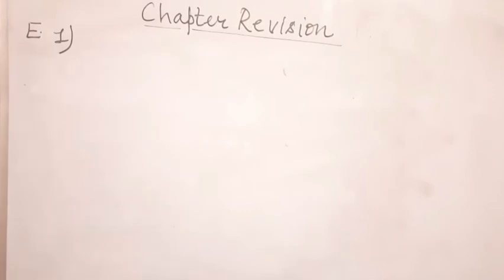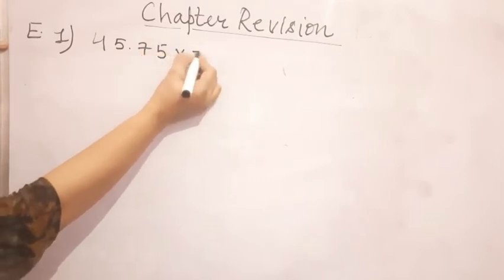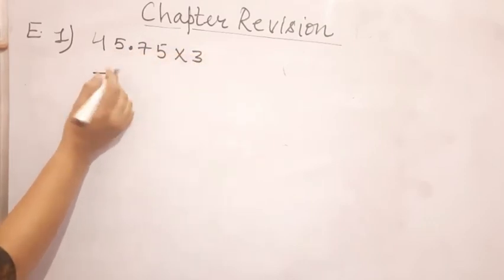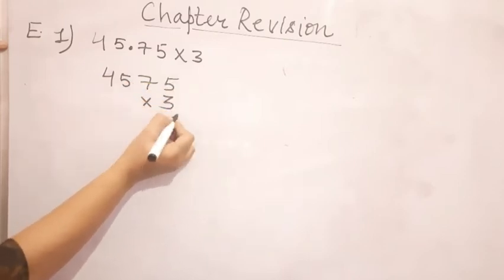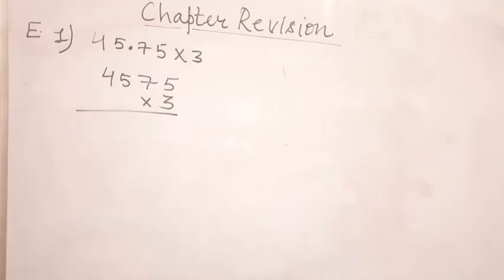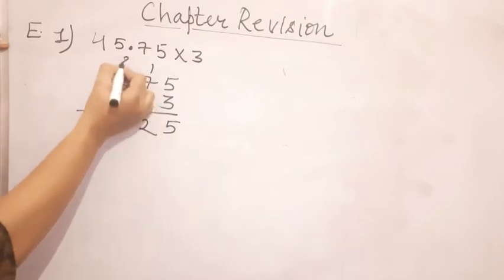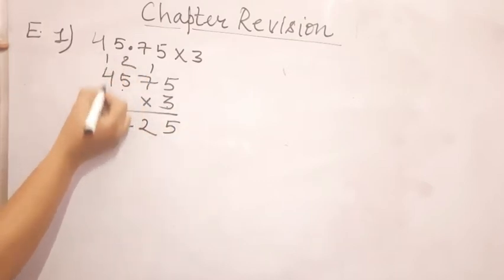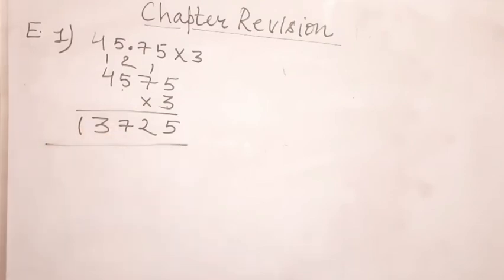The first question in Exercise E is 45.75 multiplied by 3. As I have told you, whenever you are multiplying decimal numbers just remove the decimal point and follow the standard multiplication process. So: 3 fives are 15, 1 carry; 3 sevens are 21, 2 carry; again 3 fives are 15, 17, 1 carry; 3 fours are 12 and it will be 13.